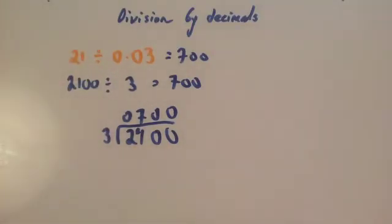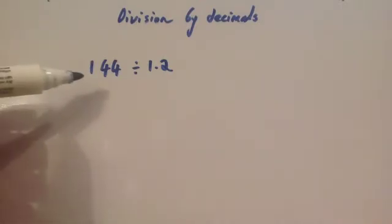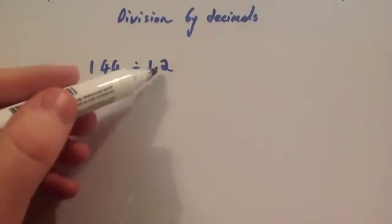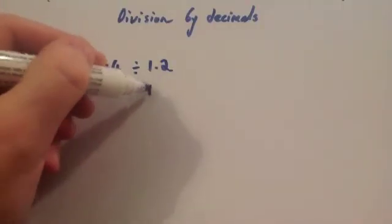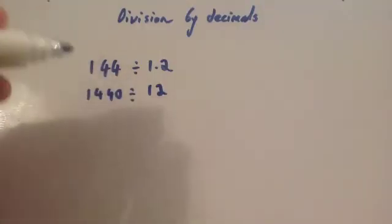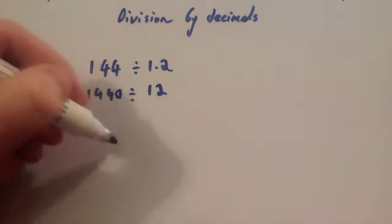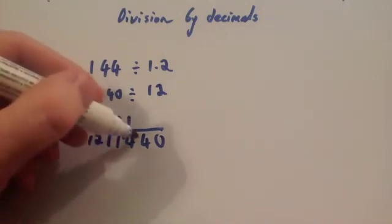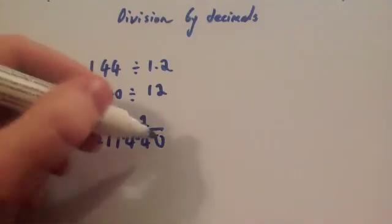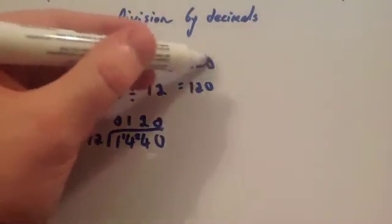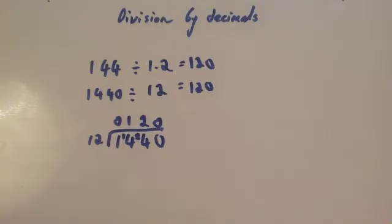If you're dividing by 0.03, you times both numbers by 100 to get an easier number to divide by. Now let's look at 144 divided by 1.2. Multiplying by 10: 1.2 becomes 12, and 144 becomes 1440. So we do 1440 divided by 12 using short division: 12 into 1 doesn't go — remainder 1. 12 into 14 goes once — remainder 2. 12 into 24 goes twice. 12 into 0 goes 0. The answer is 120, so 144 divided by 1.2 equals 120.